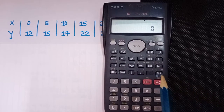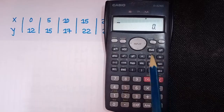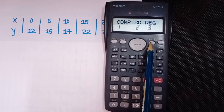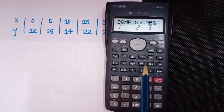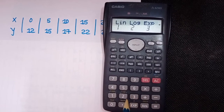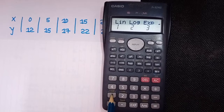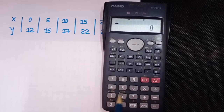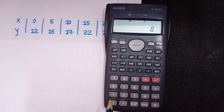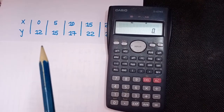First of all we'll input all these values of X and Y in the calculator. For that, click on Mode, then set it to REG by clicking on 3, then set it to Linear since we have to fit a straight line, so click on 1. Then to input the values of X and Y, the first value is: